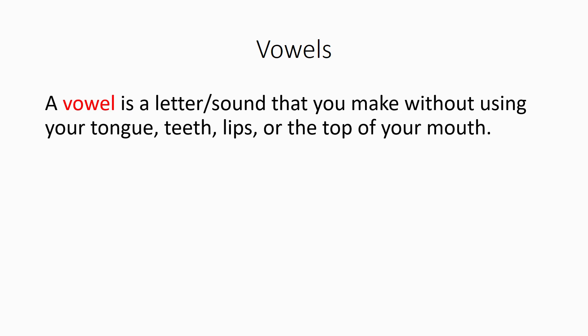What is a vowel? A vowel is a sound that you make without using your tongue, teeth, lips, or the top of your mouth. There are letters like A, E, I, O, and U, but also Y, and on rare occasions W. Because if you try making these sounds — you can try right now — notice your tongue's not really moving, nor your teeth, lips, or the top of your mouth. They're not being brought together. It's just a sound being generated by your voice box.